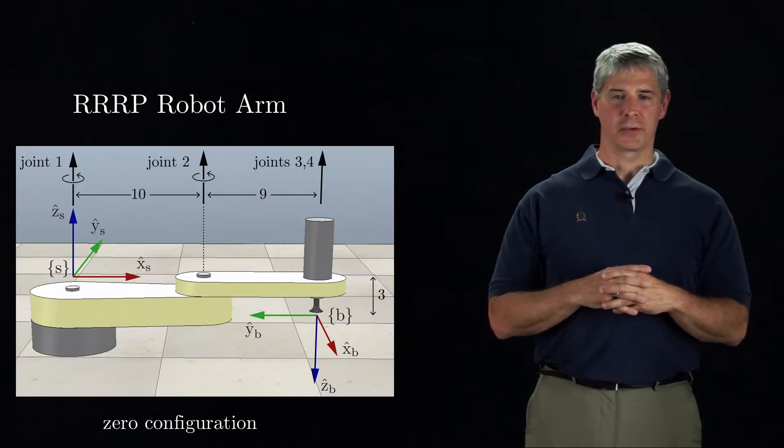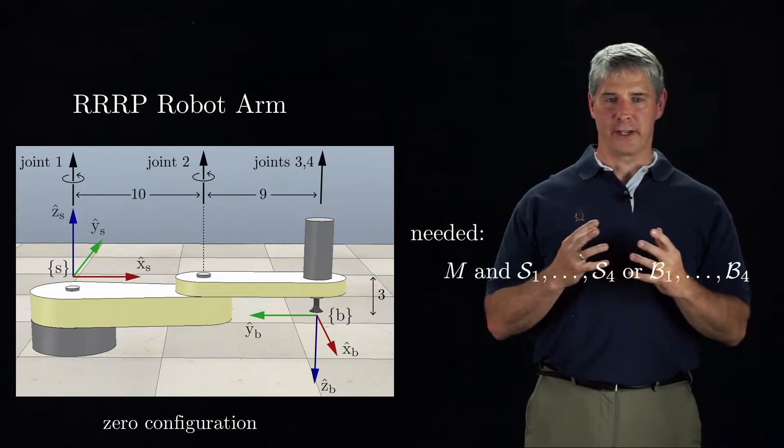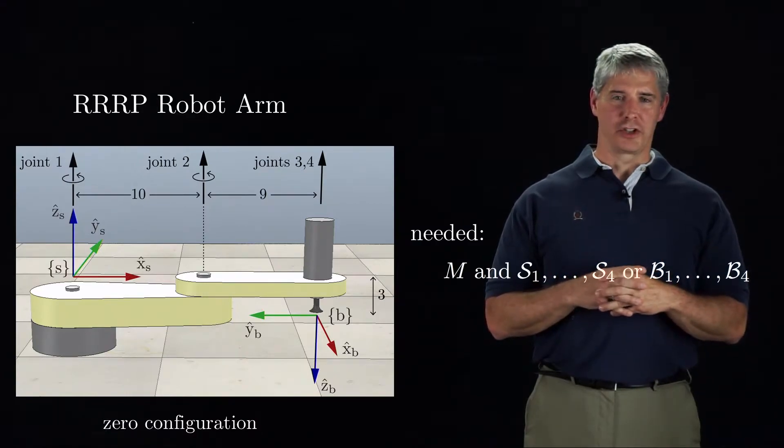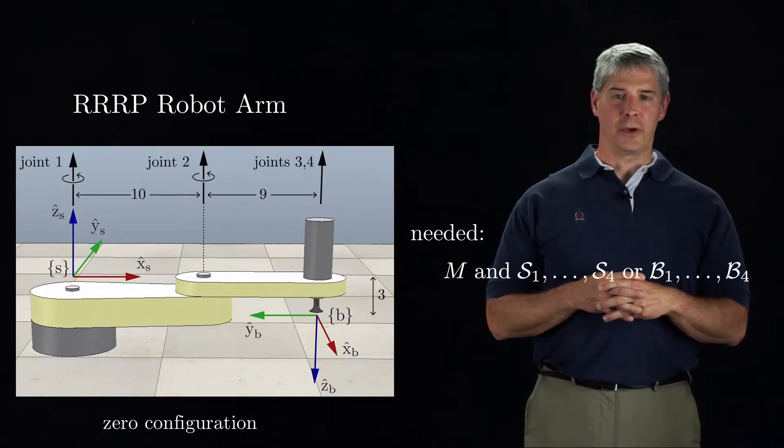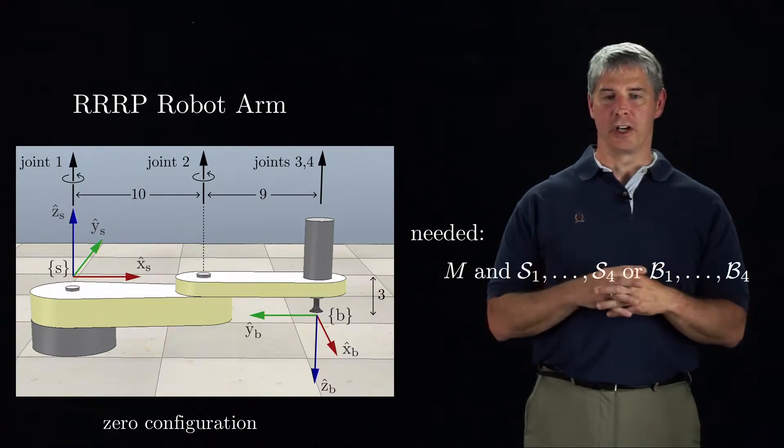To solve the forward kinematics, we need to find M, the configuration of the B-frame, and the joint screw axes when the arm is at its zero configuration. Then we can use the product of exponentials formulas from the previous videos.